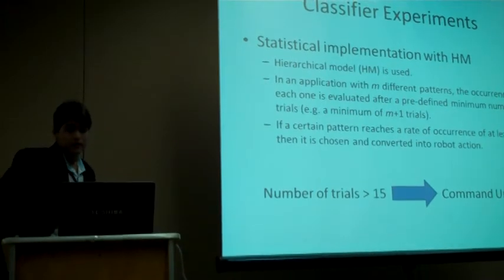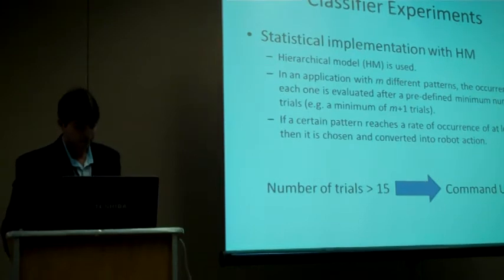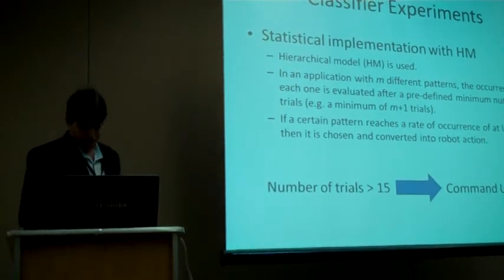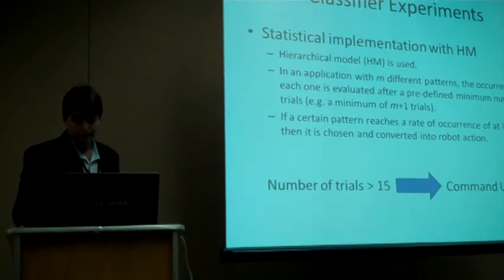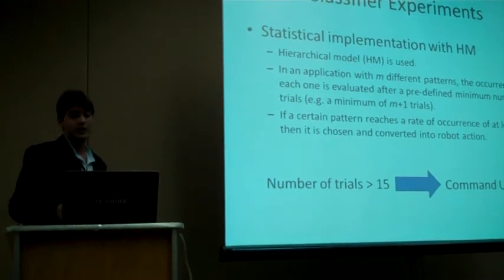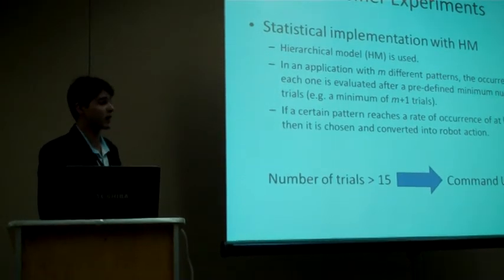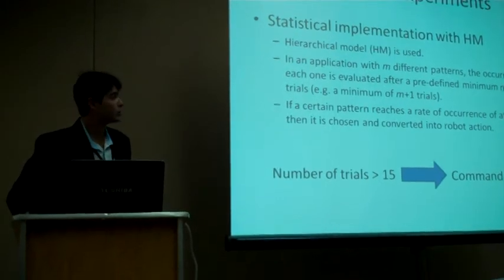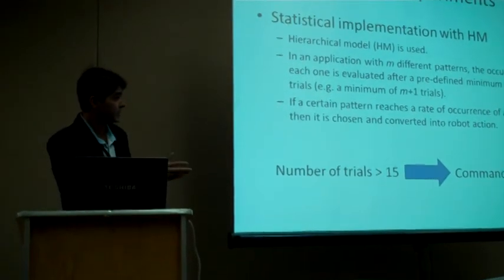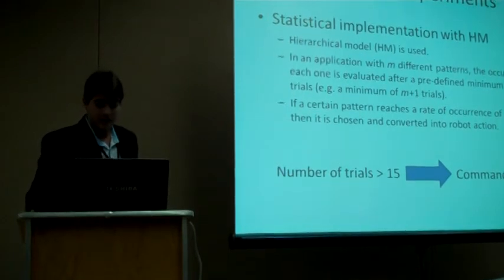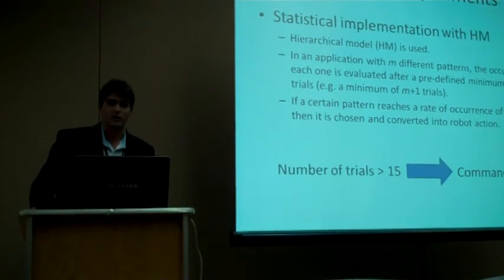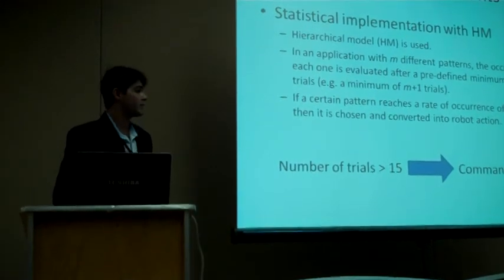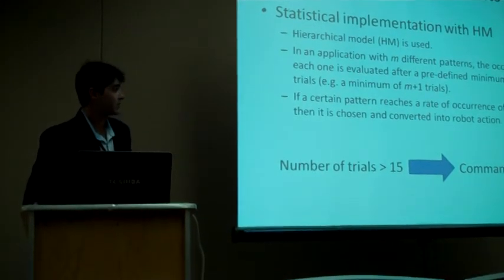The second implementation is the statistical implementation. The hierarchical model is used. The occurrence of each one is evaluated after a predefined minimum number of trials. And if the pattern reaches a rate of occurrence at least two times its intrinsic probability, then it's chosen, converting to some robot action. One more time, if the number of trials exceeds 15, the command is declared as unclear.